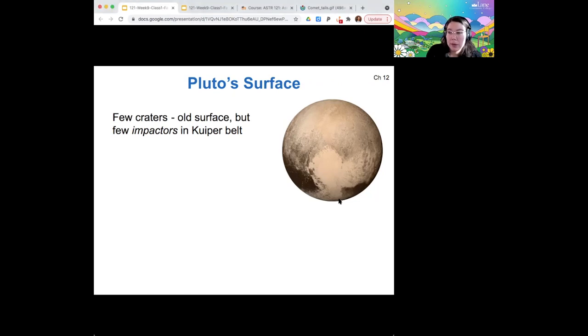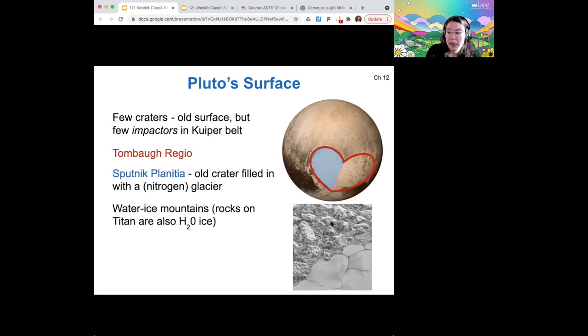There's an area called the Tombaugh Regio that's shaped like a heart, and it is light in color compared to the rest of Pluto's surface. About half of it is an old crater that's been filled in with a glacier made of frozen nitrogen. And the mountains on Titan are also made of water ice, just like Pluto's mountains. So out here in the outer solar system, ice plays the same role as rock does in the terrestrial worlds.